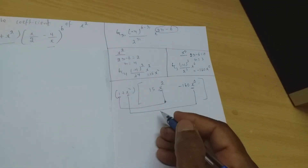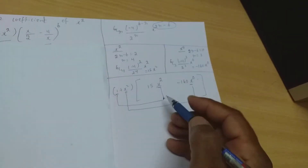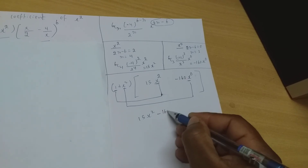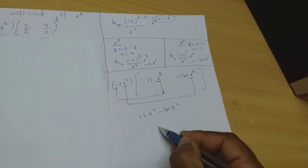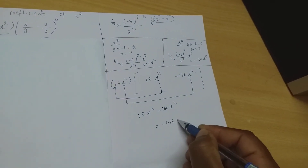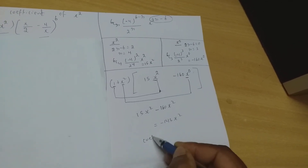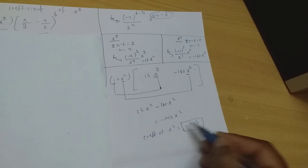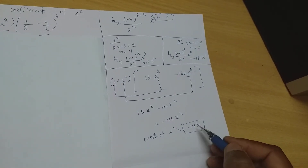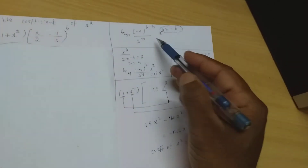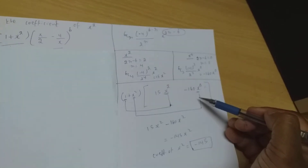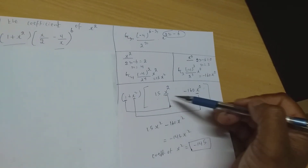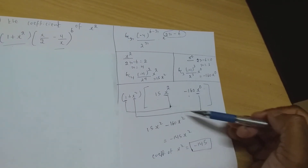Now multiply: 1 × 15x² = 15x², and x² × (−160x⁰) = −160x². So 15x² − 160x² = −145x². Therefore the coefficient of x² is −145. To summarize: simplify the general term, decide what to multiply to get x², get the respective coefficients, and simplify.